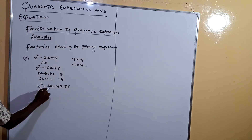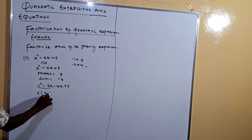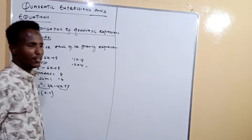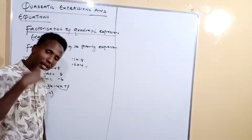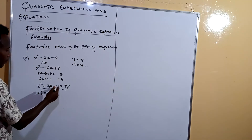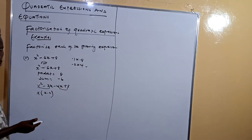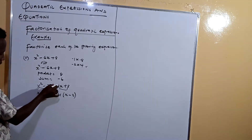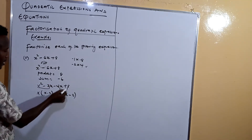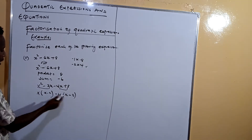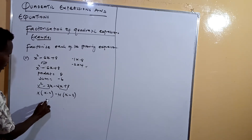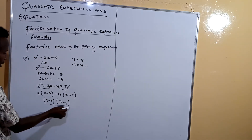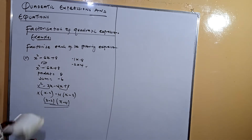We factorize these two pairs separately. The first pair gives x outside the bracket, yielding x minus 2. For the second pair, since a negative is followed by a positive, we factor out the negative of the common factor. The GCD is 4, so we factor out negative 4, giving negative 4 times (x minus 2). Since both brackets are the same, the final answer is (x minus 2)(x minus 4).